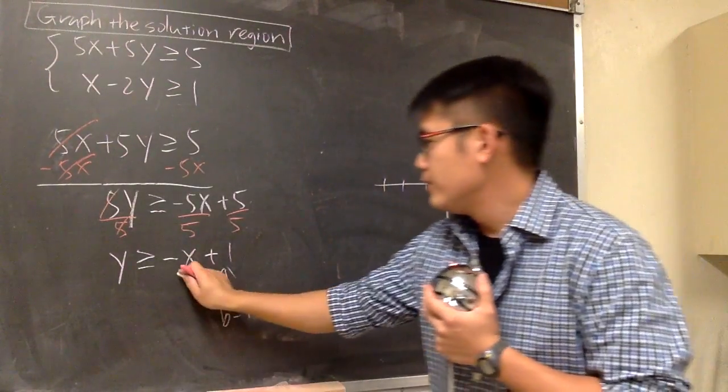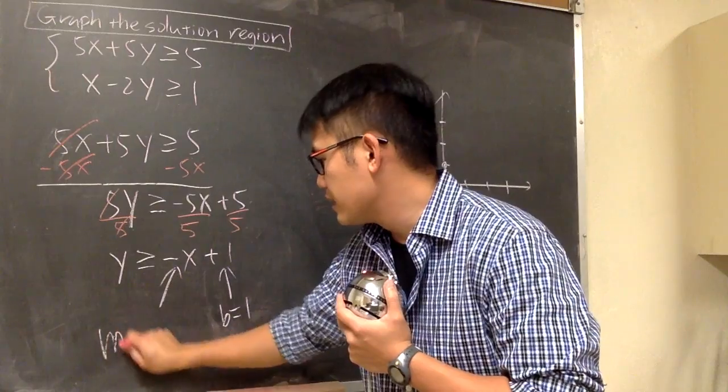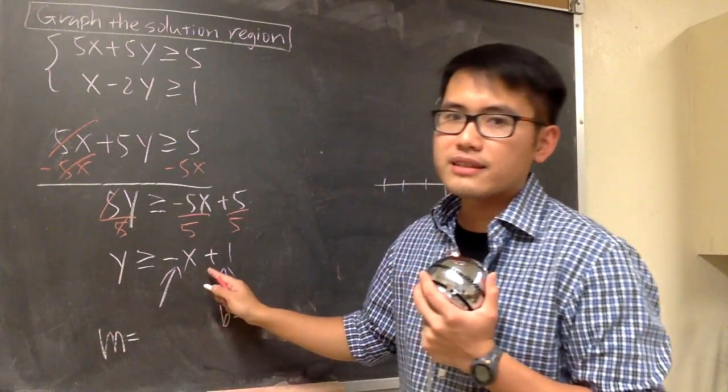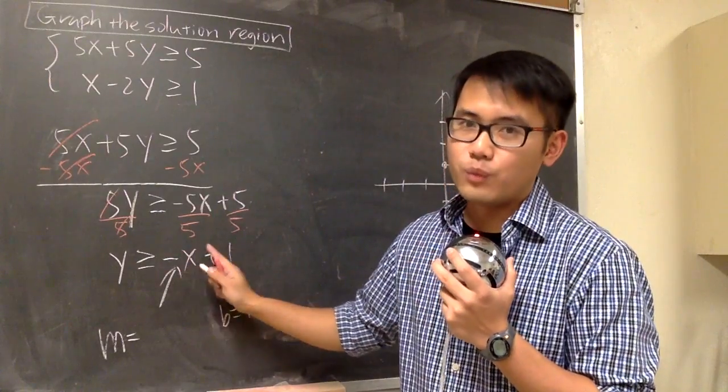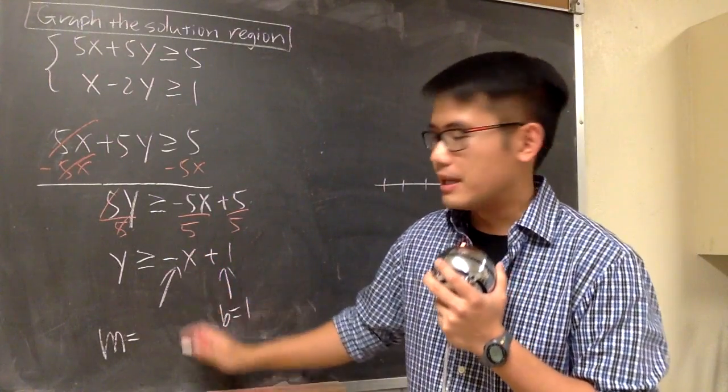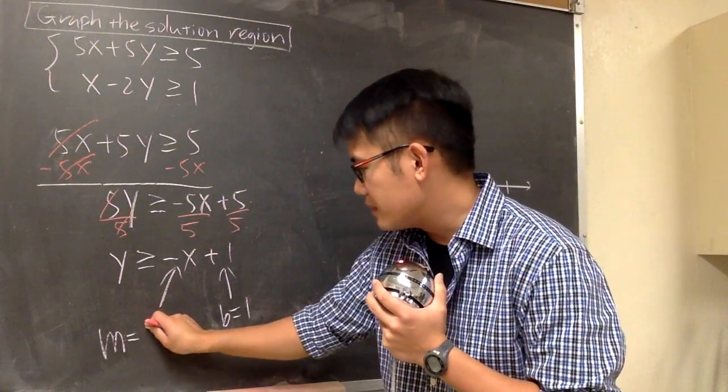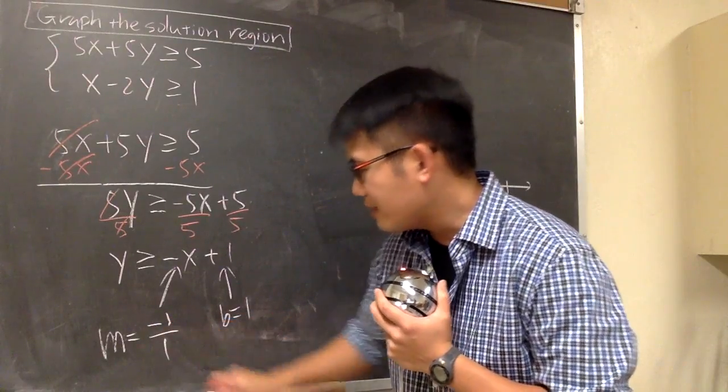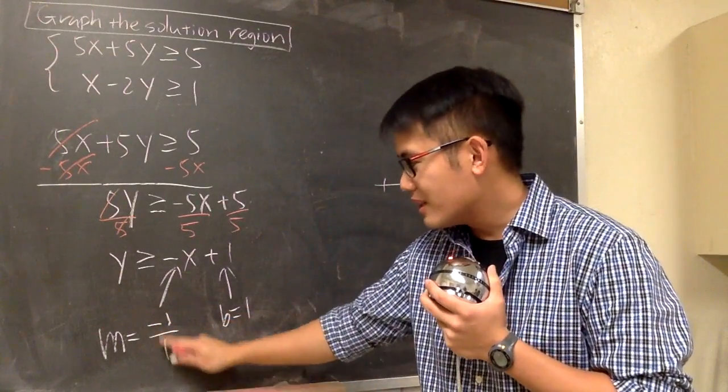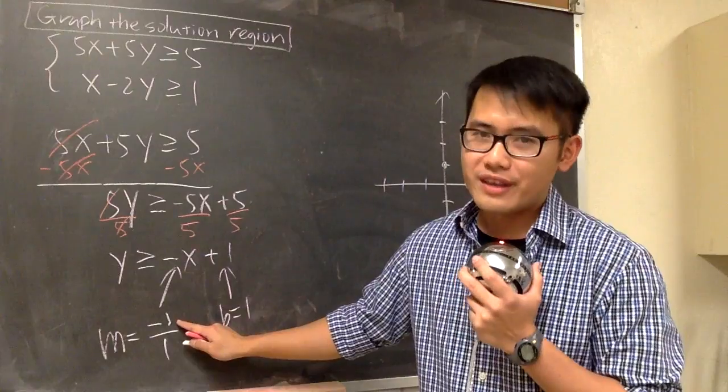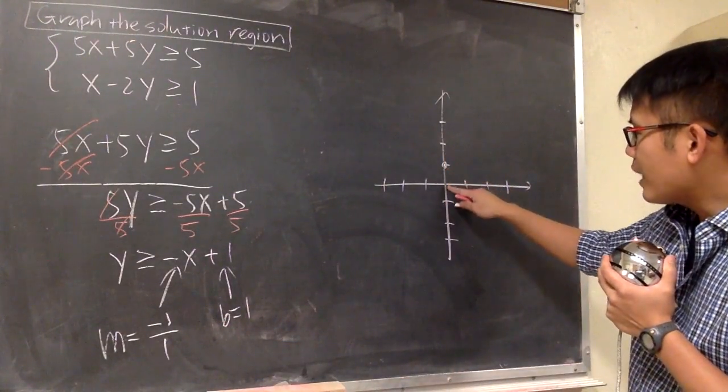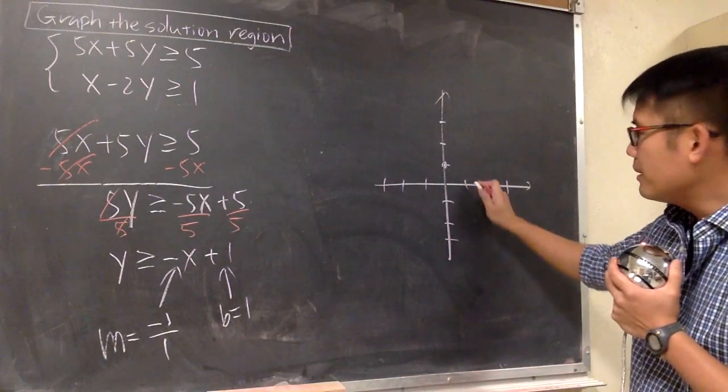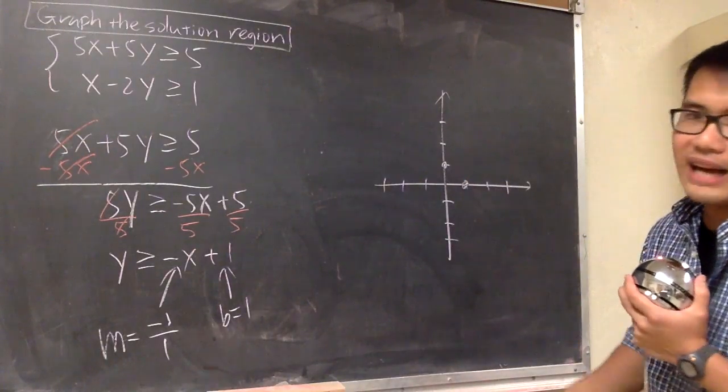And then look at the slope, which is the number in front of the x. We have negative x, that means we have negative 1. Let's look at the slope as a fraction, so we have this as negative 1 over 1. This will tell us to go down one time, to move to the right one time. So from here, go down one time, move to the right one time. This is the second point that we have.